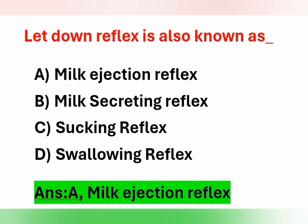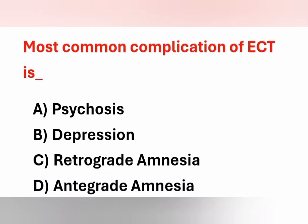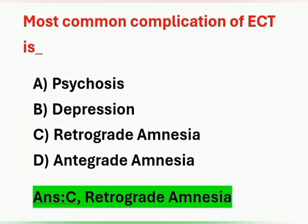Next question: the most common complication of ECT (electroconvulsive therapy) is? Options: A) Psychosis, B) Depression, C) Retrograde amnesia, D) Anterograde amnesia. Memory loss is a common complication of ECT, and among these options, retrograde amnesia is the most common. Retrograde amnesia means the patient cannot recall past memories, whereas anterograde amnesia means the patient cannot form new memories but can recall the past.